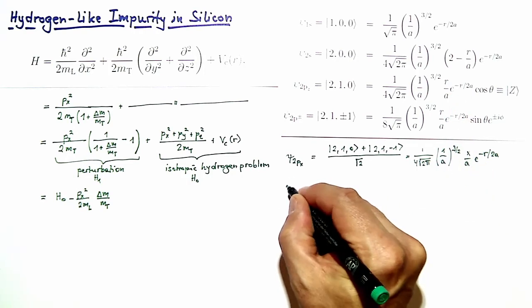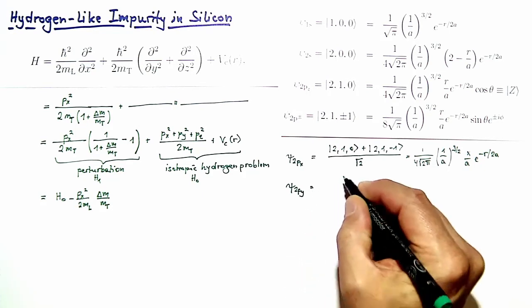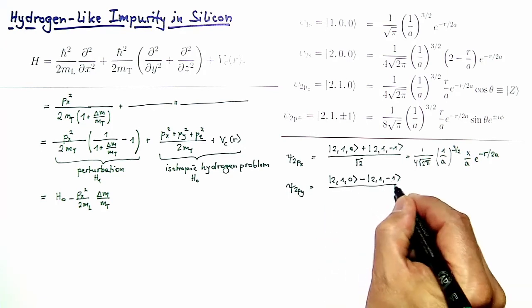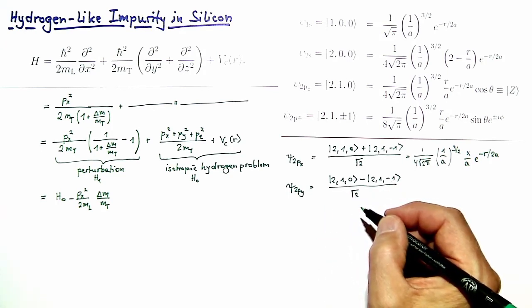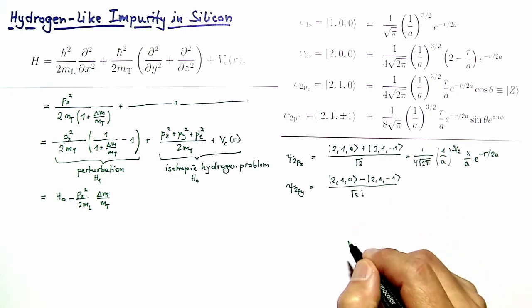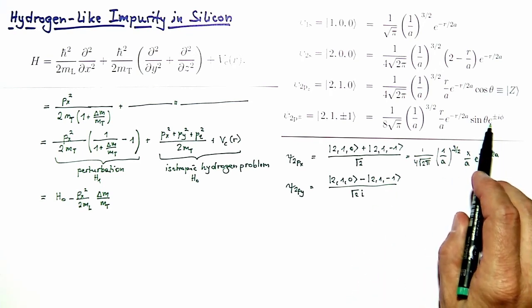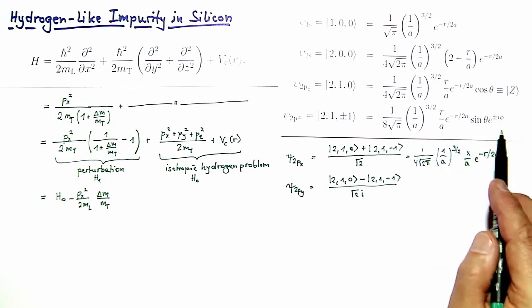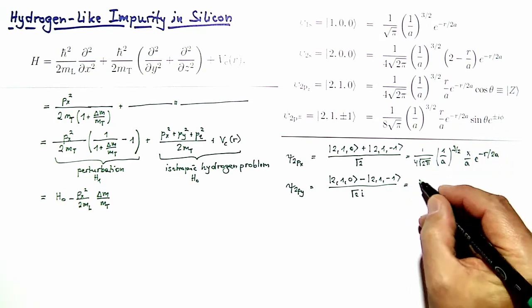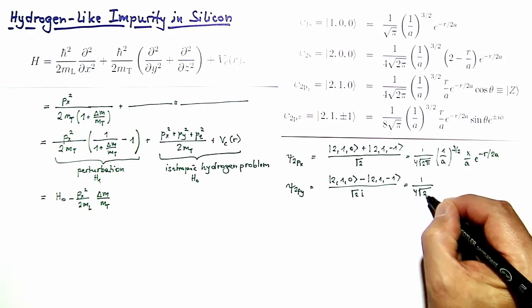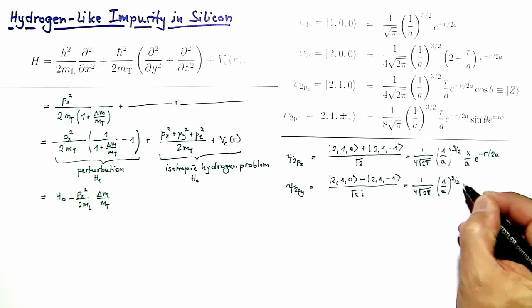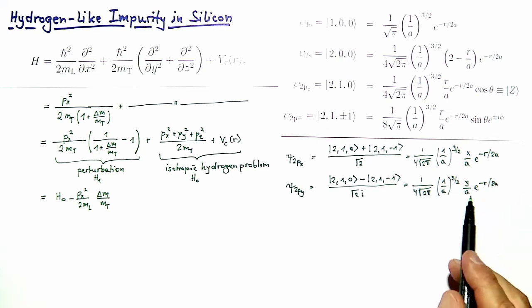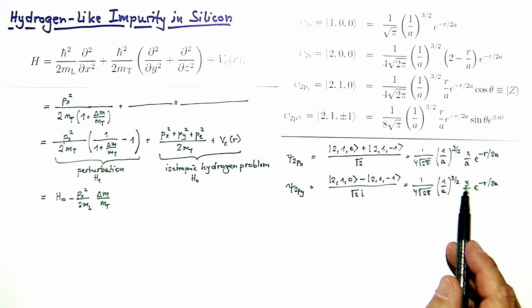In a similar way we form the linear combination psi 2py, which is the linear combination of the 2,1,0 minus the 2,1,minus 1 states divided by square root of 2. In this case we need an imaginary unit because we want to form from e to the plus i phi minus e to the minus i phi essentially a sine, to end up with r sine theta sine phi, which gives the y coordinate. So we obtain 1 over 4 square root of 2 pi times 1 over a to the power 3/2 times y over a times e to the minus r over 2a, and now the function is antisymmetric in y but symmetric in x and z.